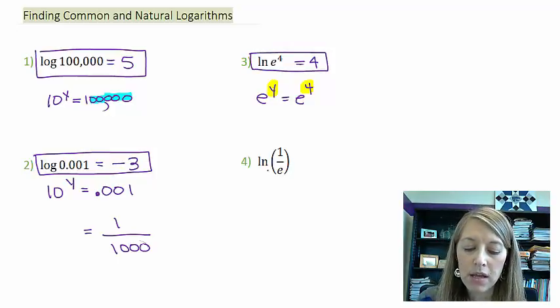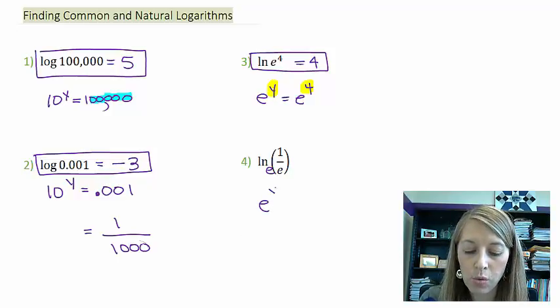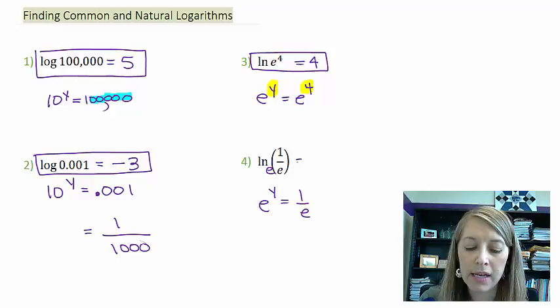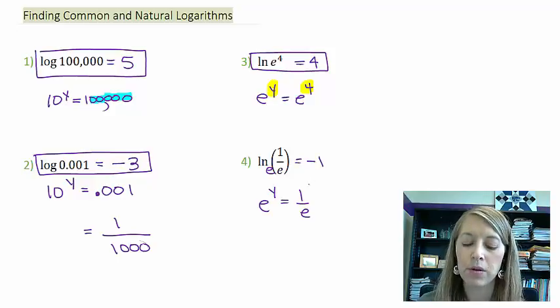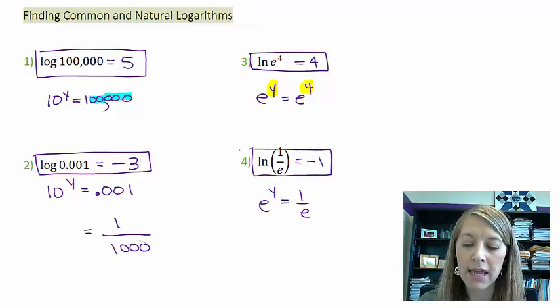The next one: e to what power is equal to one over e? Well, this is basically saying all I need to do is take the reciprocal of e. I know I can do that by assigning a negative exponent. So my answer here is negative one. The natural log of one over e is negative one.